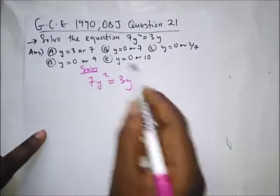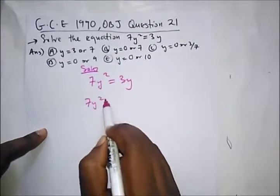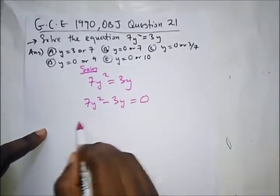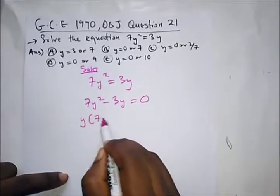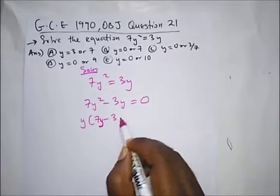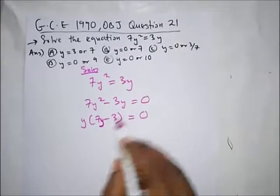So we have 7y square equal to 3y. All we need to do is bring this to this side. We have 7y square minus 3y equal to 0. And collect like terms, we have y bracket 7y minus 3 equal to 0.